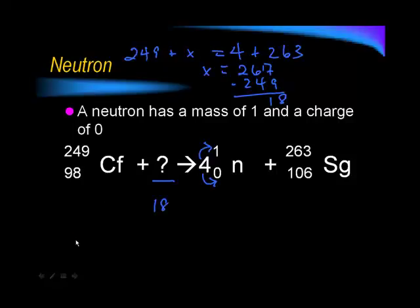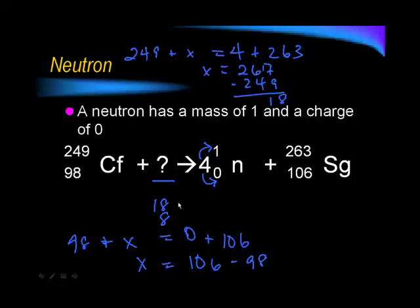So, 18. And then, on the bottom, I have 98 plus x, some unknown. Now, this is 4 times 0 plus 106. So, x is equal to 106 minus 98, and that is 8 for the difference. And then, we look up element number 8, and element number 8 is oxygen. So, that is our missing complete symbol there. So, it works the same way. The only thing different is sometimes you have that coefficient, like that 4 in front.